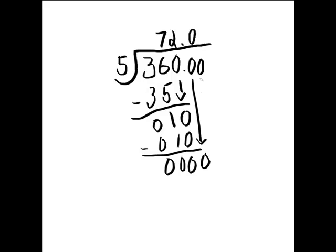So now, we have to bring down this 0. And 5 still can't go into 0. So we have to put another 0 up here to show that. So really what this is saying is each road would have 72 meters and 0 centimeters, that's the length of each road. So how you would read this is 72.00 meters. So that means 72 meters and 0 centimeters.